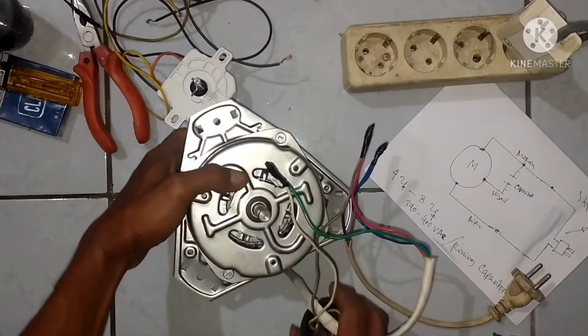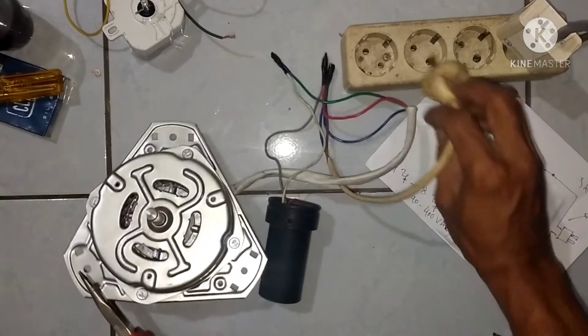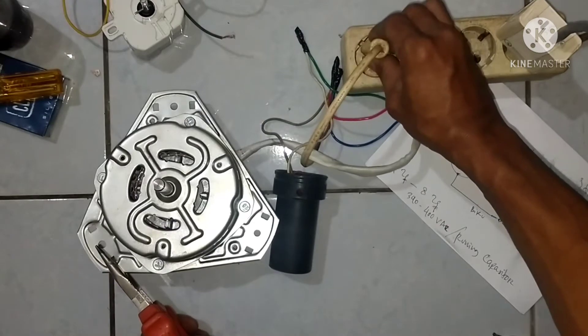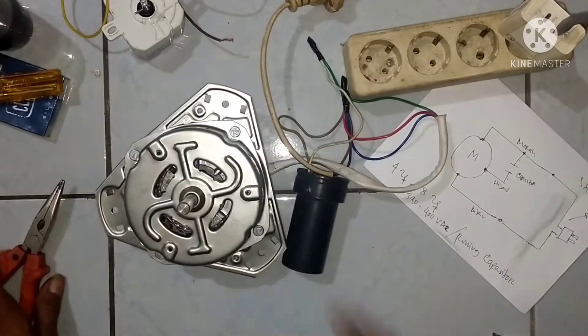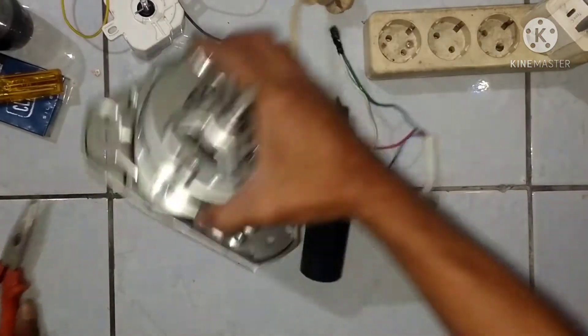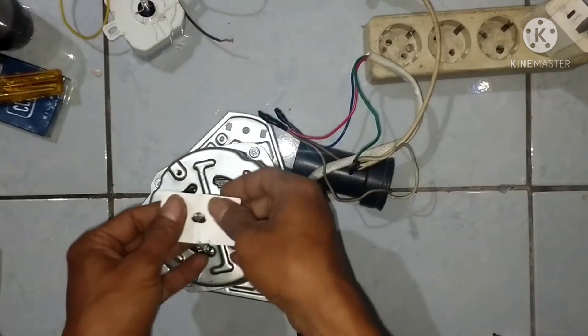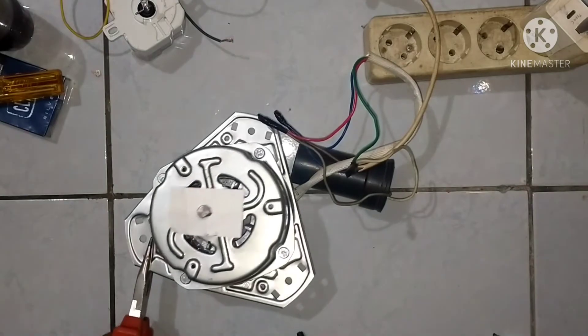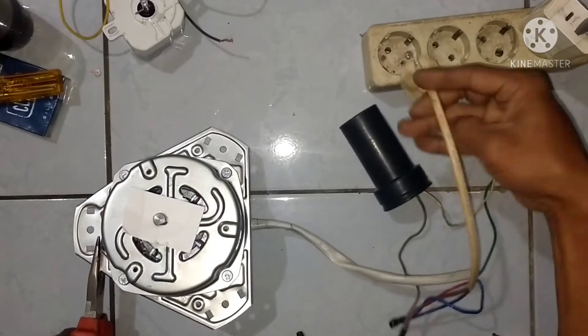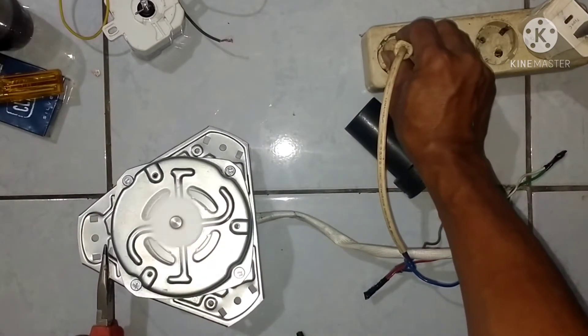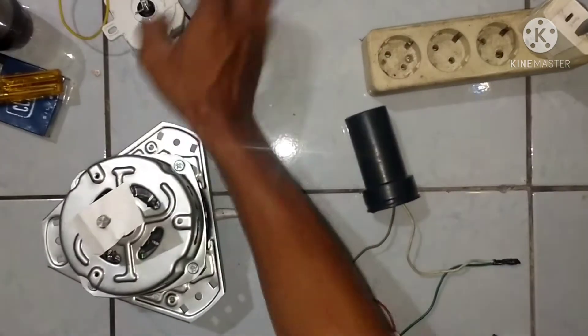Sekarang waktunya uji coba. Kenapa saya pegang dengan tang? Karena itu startnya lumayan kenceng, bantingan ya. Dan jelas kan. Sekarang kita coba lagi biar ada tanda ya, biar ada tanda itu putaran saya pakai kertas saja. Kita tak lebih rotornya biar terlihat bahwa itu baru berputar. Kita coba lagi. Mantap.